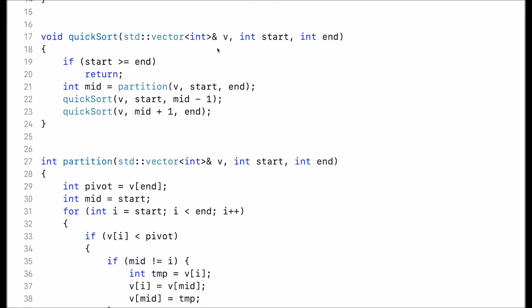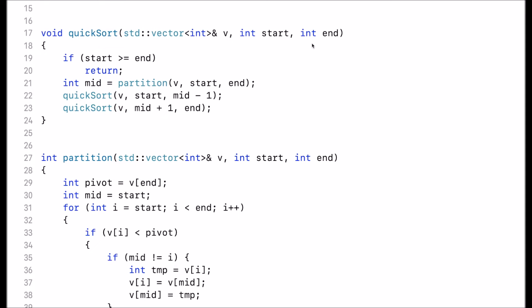The quicksort function gets a reference to a vector and start and end indices. The indices passed to the quicksort function are both inclusive. That means for a vector of size 5, the start index would be 0, the end index would be 4.